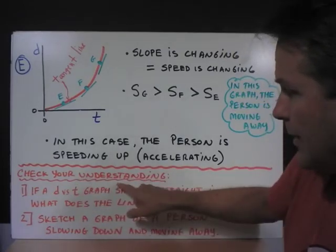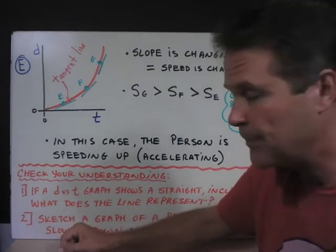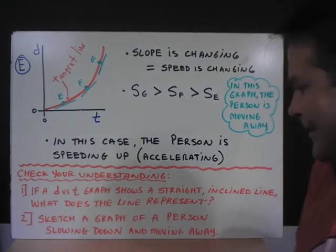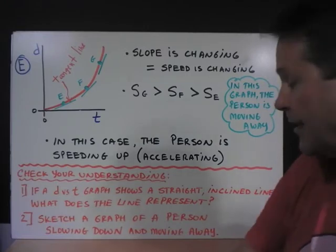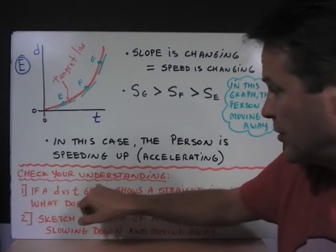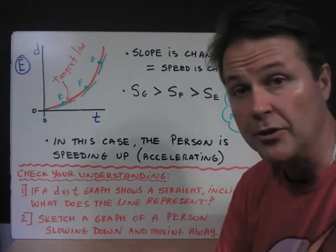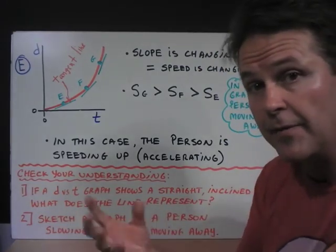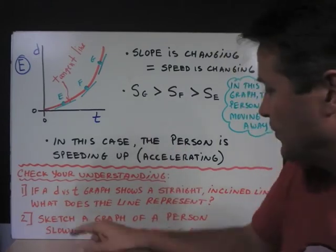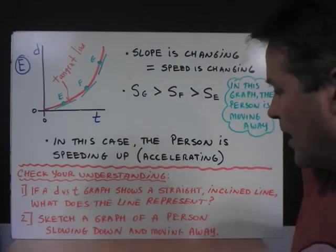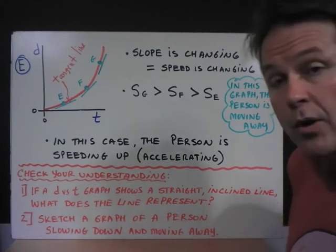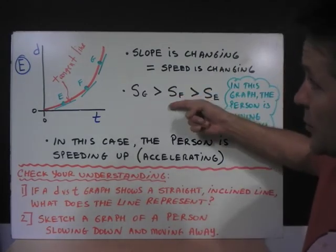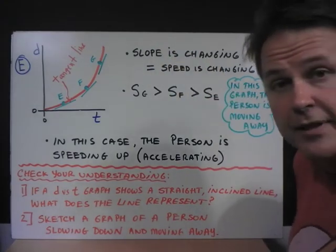To check your understanding, I have two questions for you to consider. If a distance versus time graph shows a straight, inclined line, what does the line represent? Draw that graph, and then answer that question in your notebook. The second question: sketch a graph of a person slowing down and moving away. Think of what you saw in this particular graph, and that should help you.